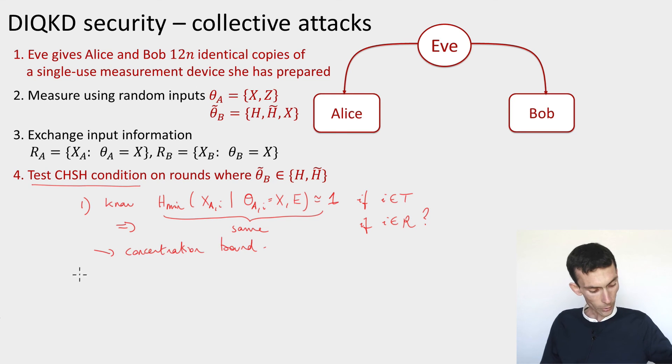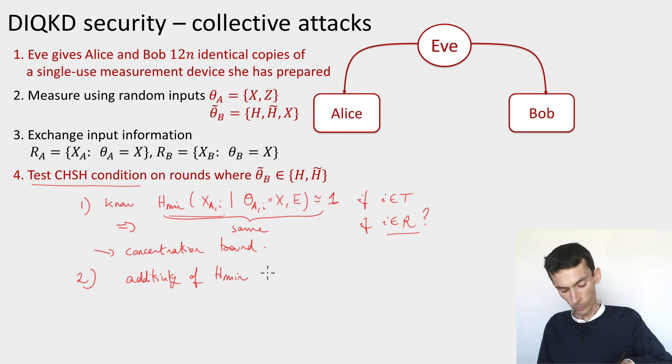Because this device behaves the same in every single round, if in the test rounds it satisfies this condition, then it's also going to satisfy it in the rounds that are used for the raw key. That's a concentration bound. The second step is that we used the fact that now we know that the condition on the min entropy holds for all the raw key rounds, but individually for each round to conclude that a lower bound on the min entropy of the total outputs in the rounds that are used for the raw key. For that, we used additivity of the min entropy when it's evaluated on states that are in a tensor product form. Here it's crucial that we're restricting the eavesdropper to collective attacks, to preparing states that are in tensor product form. This is not something that we could have checked by ourselves.